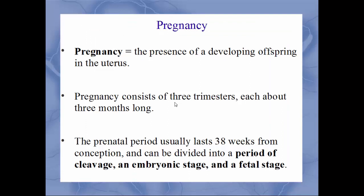Next we'll talk about pregnancy — the presence of a developing offspring within the uterus. Each pregnancy will have three trimesters, each roughly three months long. This prenatal period will last around 38 weeks from conception. Pregnancy is divided into three periods: a period of cleavage, an embryonic stage, and a fetal stage. An embryo and a fetus are not the same thing — they are different in how developed they are. So you have an embryo first and then the fetus.